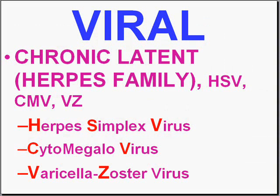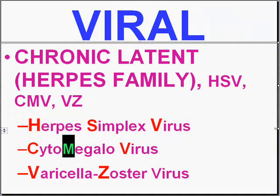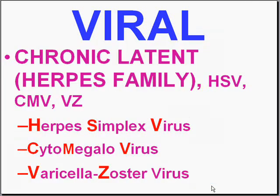The second category is chronic latent viral infections, of which the herpes family is the main classification. This includes herpes simplex virus, CMV, and the varicella zoster virus — all causing a chronic latent pattern of infection. Clinically it may resolve but can come back years later, especially when immunity is down or the patient is immunosuppressed. These viruses don't really go away easily, but they can stay dormant without causing acute tissue damage for long periods.